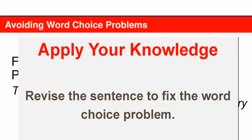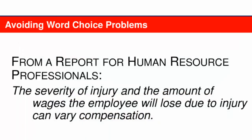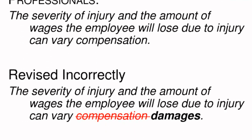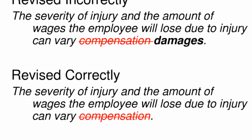Now it's time to check your understanding by revising a sentence you haven't seen before. Pause the recording and look at the sample sentence from a report for human resource professionals. You should have recognized there's something funny about the use of 'very compensation,' and that you can fix the problem by deleting 'compensation.' Either the verb 'very' doesn't allow a direct object, or it doesn't allow one with the qualities of the noun 'compensation.' Replacing 'compensation' with a different noun, for example 'damages,' doesn't solve the problem with the use of 'very.' So the problem is one of subcategorization — the verb 'very' does not allow a direct object.